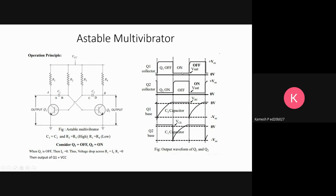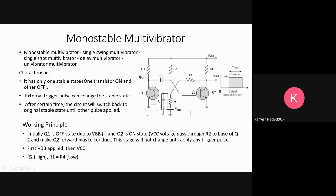You can see there is an oscillating state in the astable multivibrator output. Monostable multivibrator is also called single swing multivibrator, single shot multivibrator, delay multivibrator, or univibrator multivibrator.